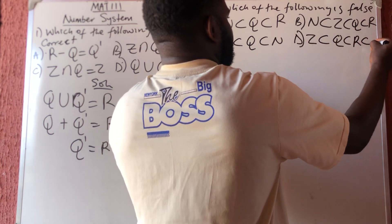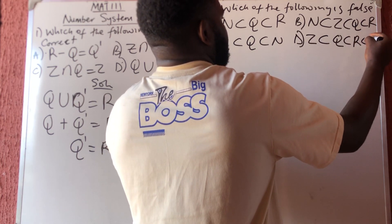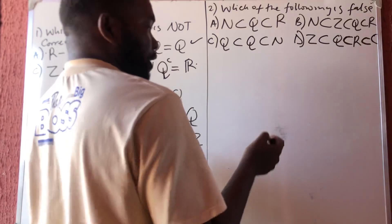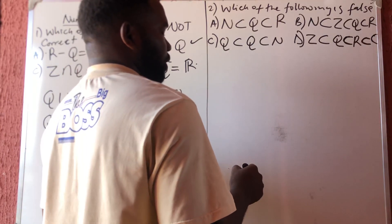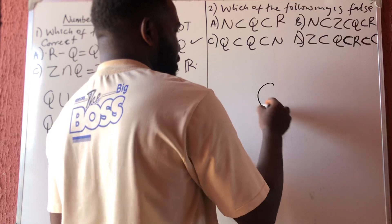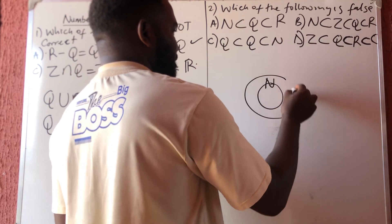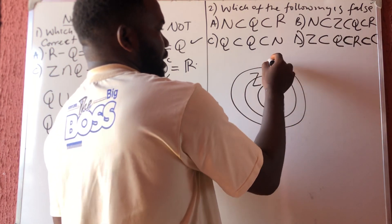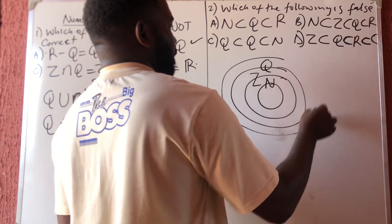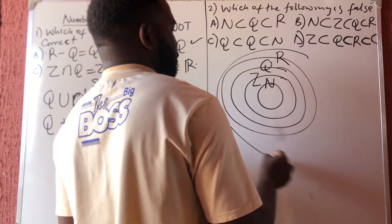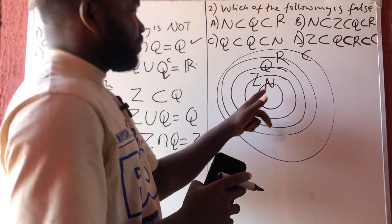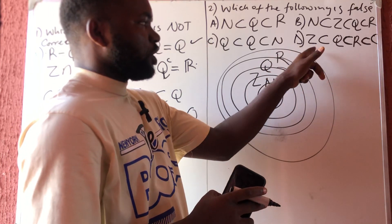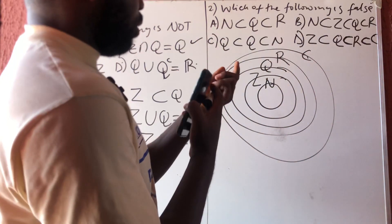Remember the summary from my video on number system — picture a small circle N, covered by Z (integers), covered by Q (rational numbers), covered by R (real numbers), and finally covered by C (complex numbers). So the full chain is: N is a subset of Z, which is a subset of Q, which is a subset of R, which is a subset of C.